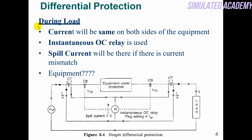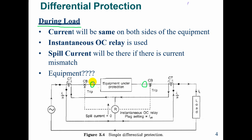Differential protection — how it works for normal load: here I have a source, and here is the equipment which I have to protect under differential protection. There is a primary side and secondary side, which is input and output. Current and voltage are measured using CTs and PTs. The primary CT and secondary CT are used, and we have circuit breakers on both sides.